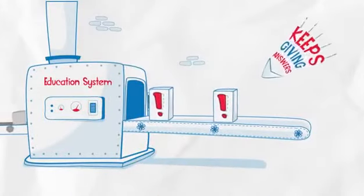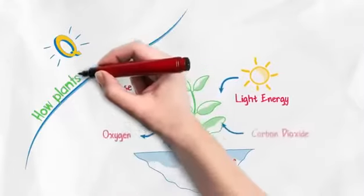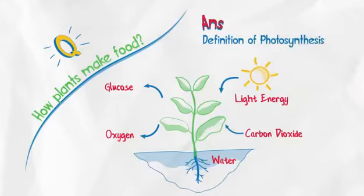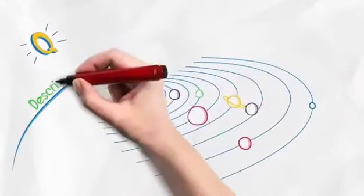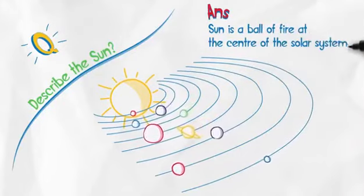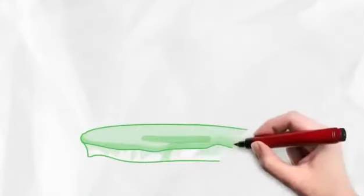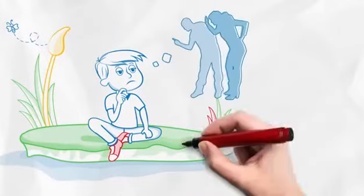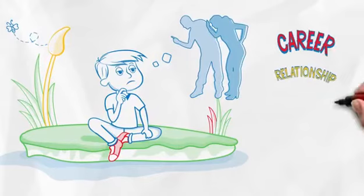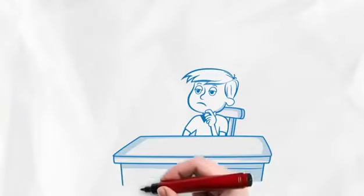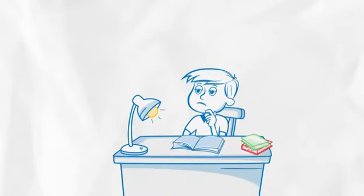Right from kindergarten, the education system keeps giving answers. Instead of asking children how plants make food, the science teacher gives you the definition of photosynthesis. Instead of asking them to describe the sun, the teacher tells them that the sun is a ball of fire at the center of the solar system. Through their years in school, children lose the capability to think on their own. Whether it is their choice of career or their relationship or any situation in life, they become dependent on others for answers. They completely lose their true nature and their extraordinary potential remains unrealized.